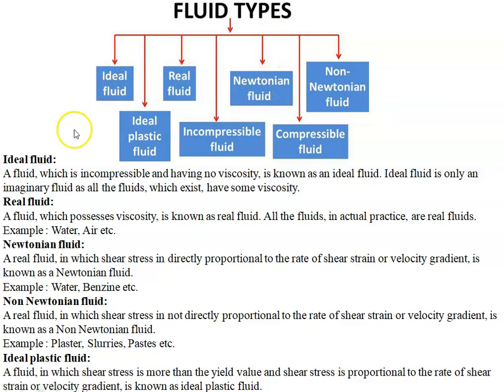Ideal fluid is a fluid which is incompressible and has no viscosity. Real fluid is a fluid which has viscosity. In practical life, every fluid we encounter has some amount of viscosity — maybe a very small amount — so there is no fluid in this world with zero viscosity. That means every fluid is a real fluid, and the ideal fluid is essentially an imaginary fluid.